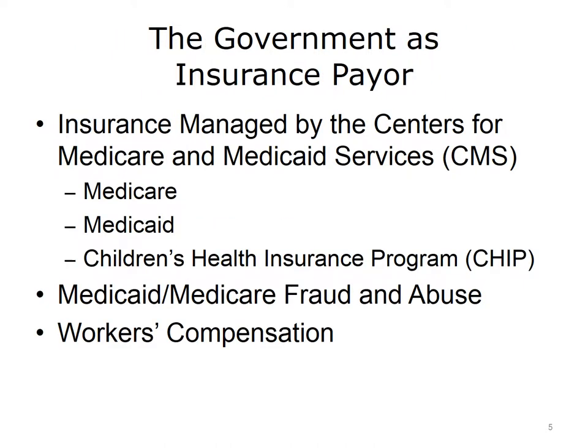This lecture discusses the government as insurance payer, including the different insurance that is managed, administered, and delivered through the government at the federal level, at the state level, or both, through the Centers for Medicare and Medicaid Services, or CMS. It also describes the three CMS-administered programs — Medicare, Medicaid, and the Children's Health Insurance Program, or CHIP — and how these programs operate, receive funding, and their relationship to each other.